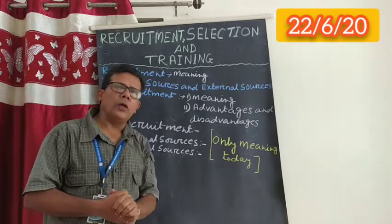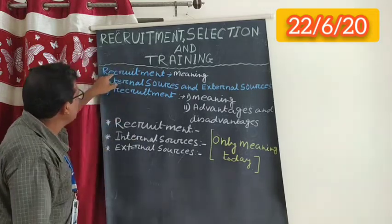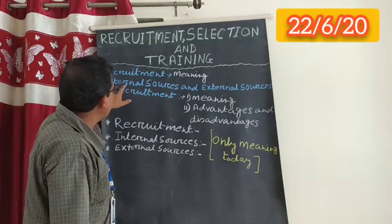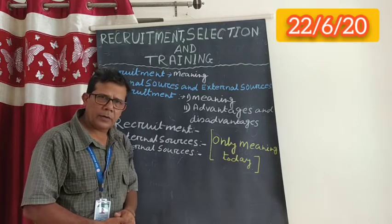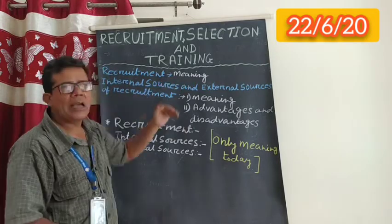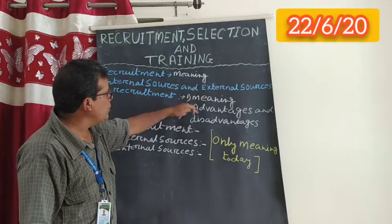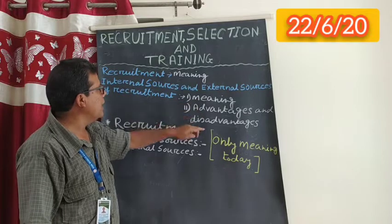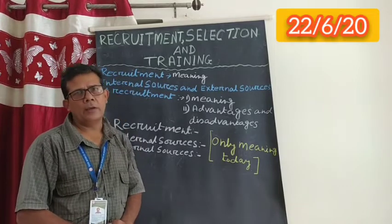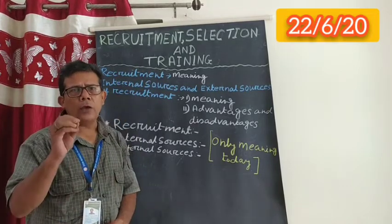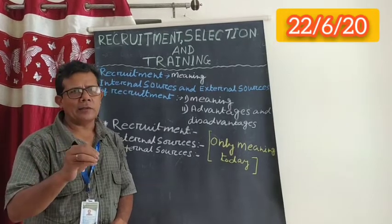In recruitment, what are the things you are supposed to learn for the purpose of ICSD examinations? First is recruitment's meaning. The second thing is internal sources and external sources of recruitment. And in internal sources and external sources of recruitment, you are supposed to learn the meaning and the advantages and disadvantages. So today I am only going to deal with a part of recruitment in today's class.